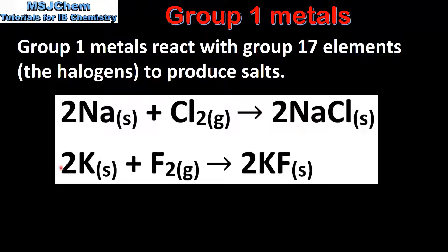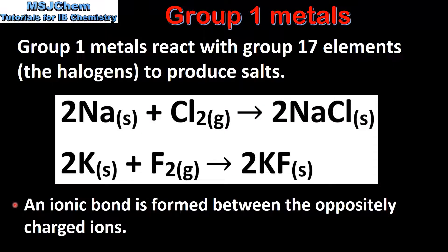The second example is the reaction of potassium with fluorine to produce potassium fluoride. In the reaction, an ionic bond is formed between the oppositely charged ions. Ionic bonding will be covered in more detail in topic 4.